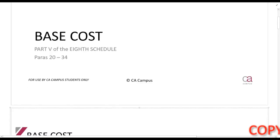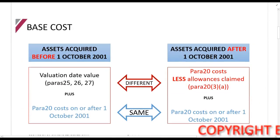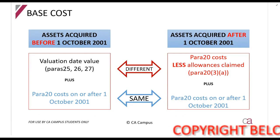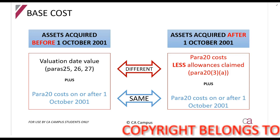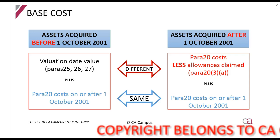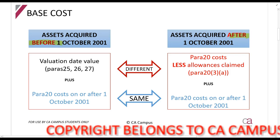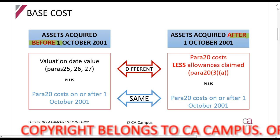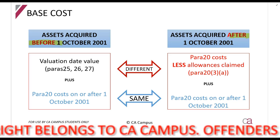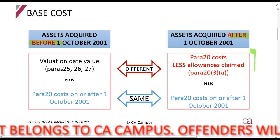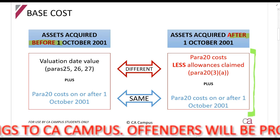We are now looking at base cost, which is obviously a very important part of the CGT calculation. The first thing to note is that the base cost calculation for assets acquired before 1 October 2001 and for assets acquired after 1 October 2001 is a little bit different — you need to know this. For assets acquired after 1 October 2001, in my opinion, this is the most important one.